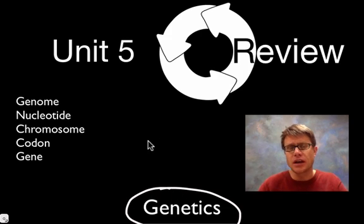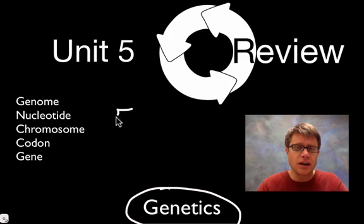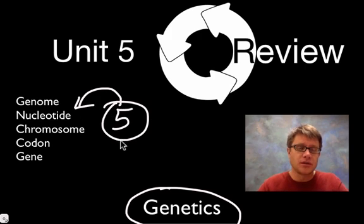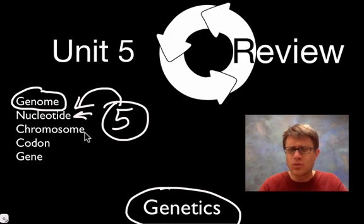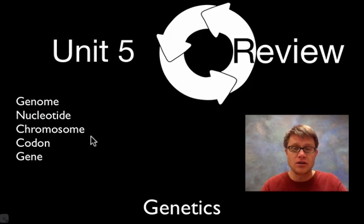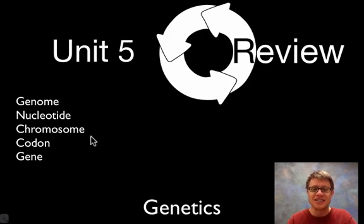Before we get too far into genetics you should have a good understanding of size. I've taken these five terms over here and you should be able to put them in order from the largest to the smallest. If you can't put those in order you may want to pause the video and go figure it out. Because the genome is going to be all the genetic information in us, and the smallest of these is going to be the nucleotide. If you can't figure out what's a gene, what's DNA, you're going to struggle with a lot of this. First thing you want to do is get a map and figure out where you are. But if you understand all of those things, let's get started.